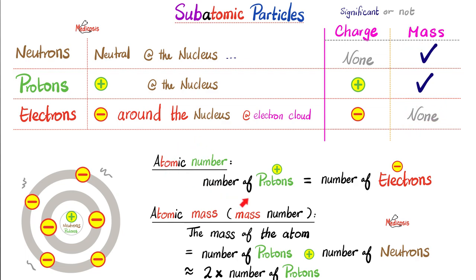The atomic number is the number of protons, which happen to equal the number of electrons. If you have downloaded the periodic table from ptable.com, look at sodium — number 11. You'll find it in the third row. Above sodium there is the number 11 — that's the number of protons, or the number of electrons, in the neutral sodium atom.